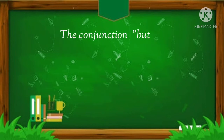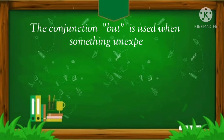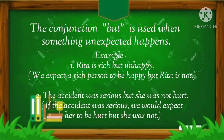The conjunction 'but' is used when something unexpected happens. For example: Rita is rich but unhappy — we expect a rich person to be happy but Rita is not. Second example: The accident was serious but she was not hurt. If the accident was serious, we would expect her to be hurt, but she was not.